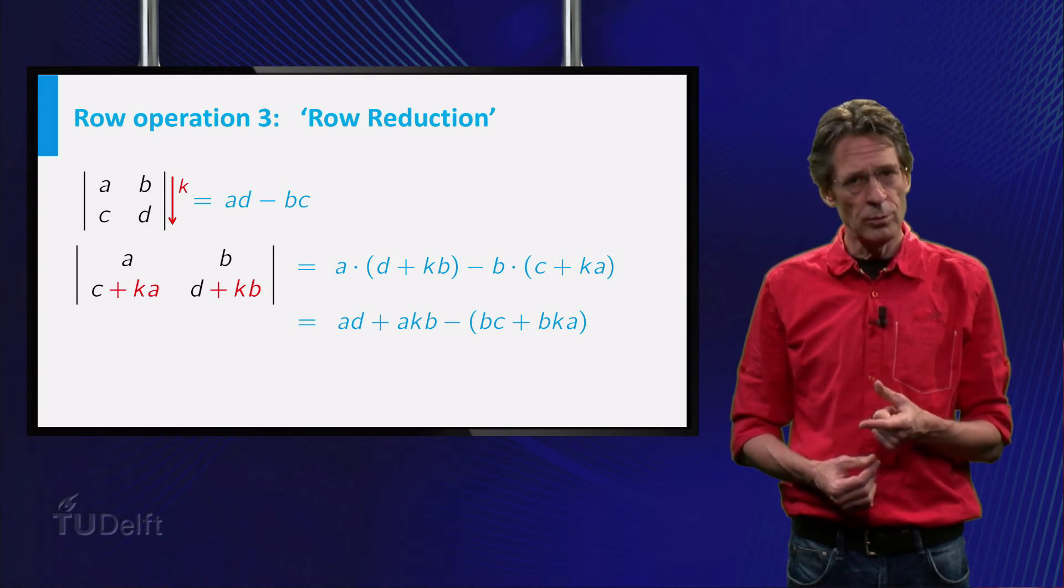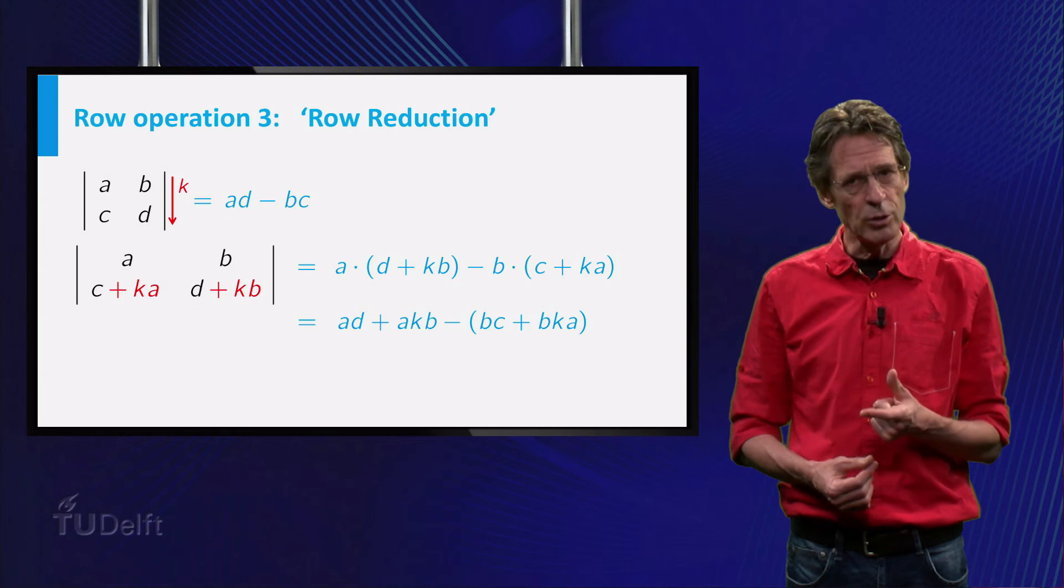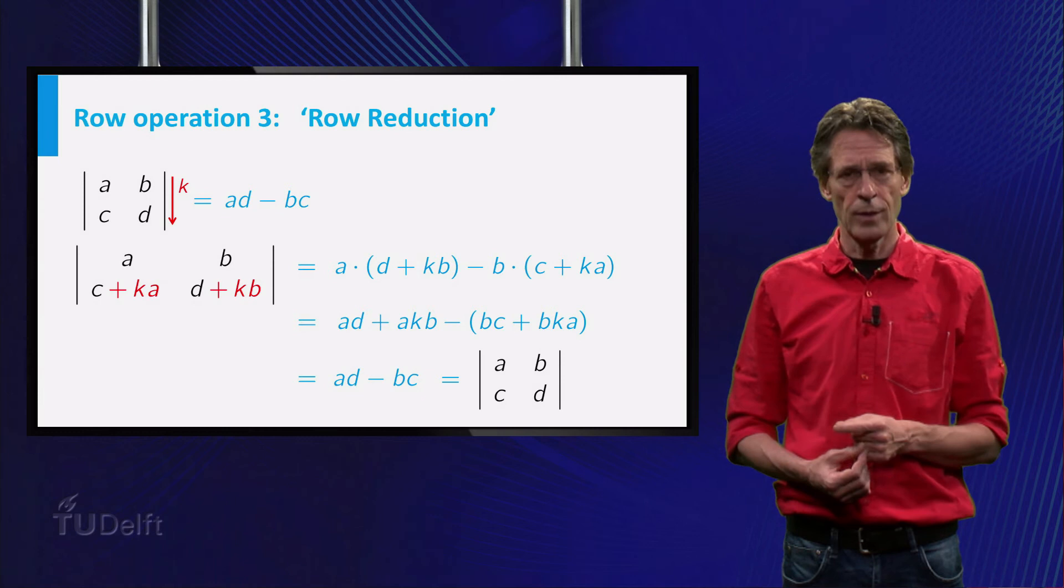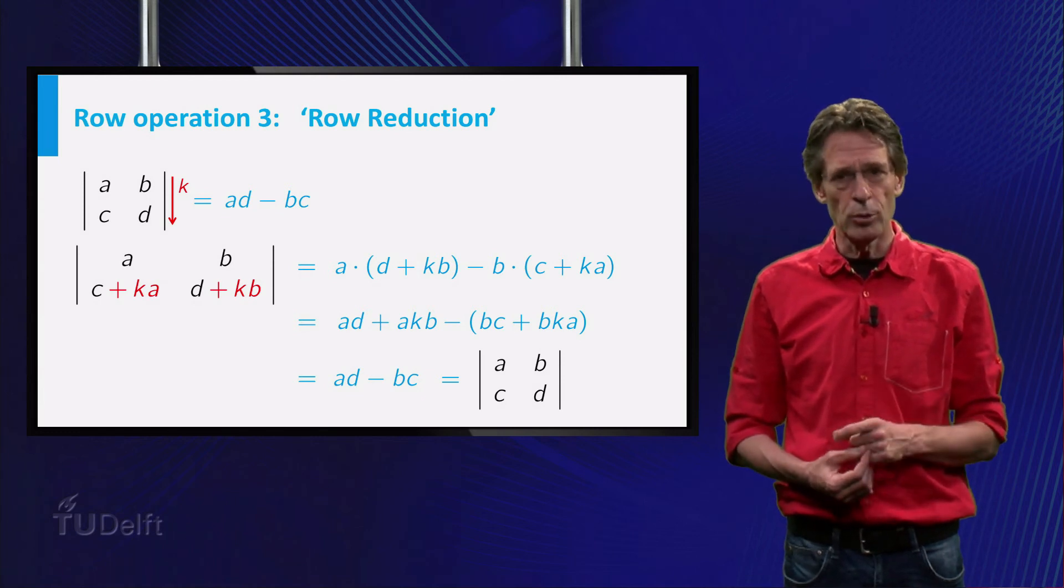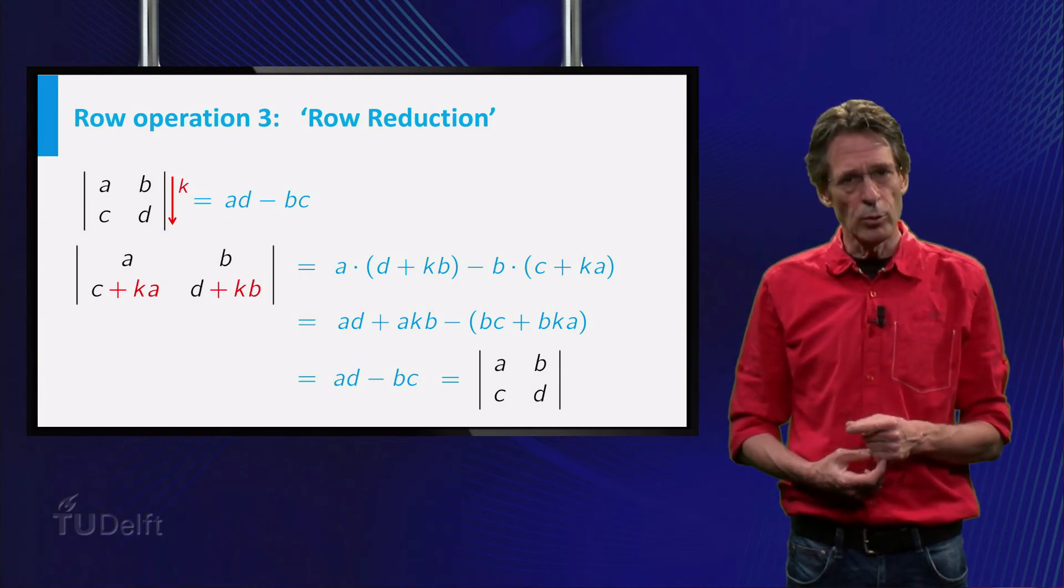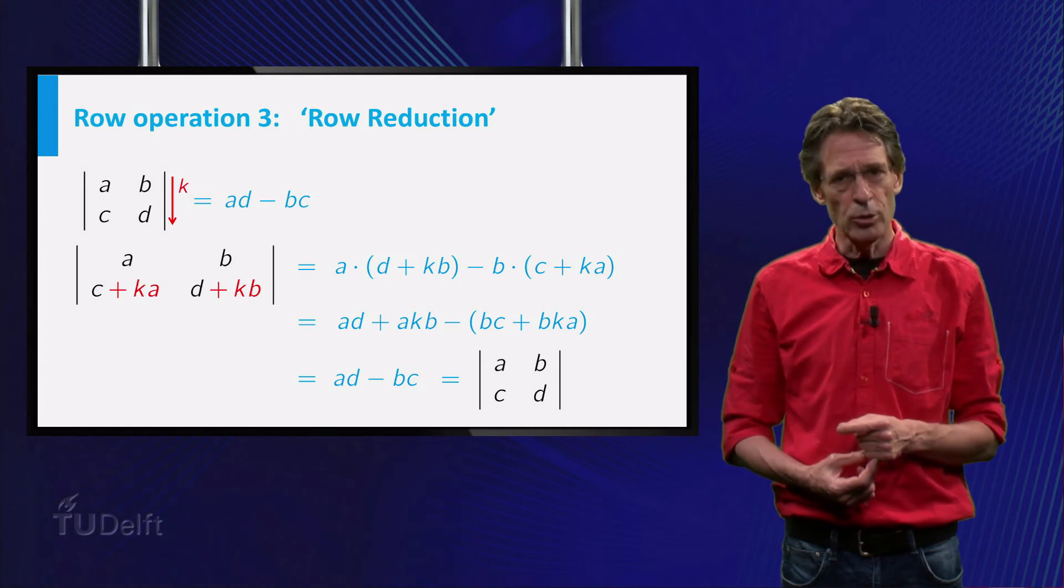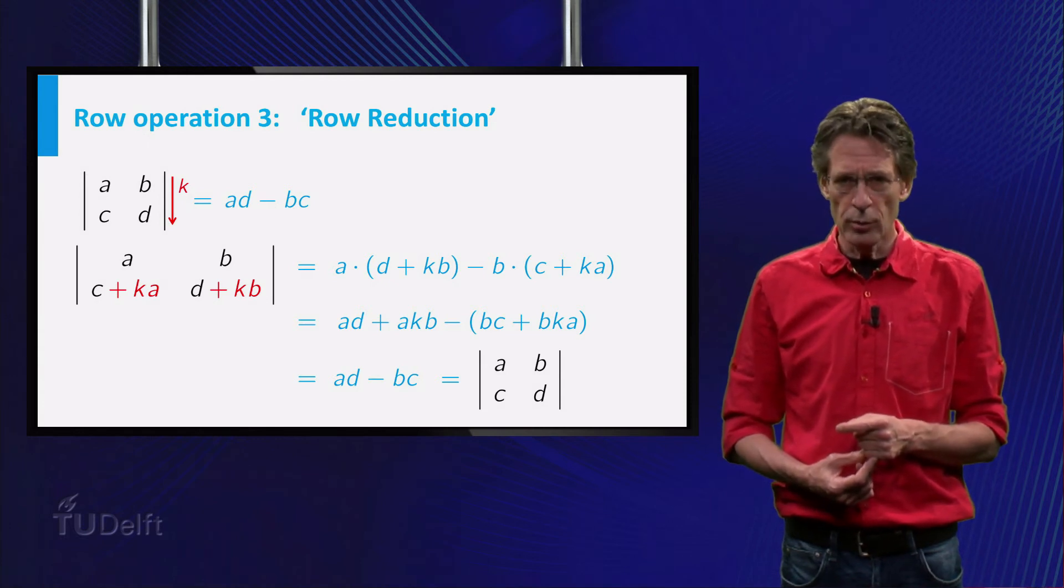You see, don't you? And if you delete these terms, you find that the second determinant is equal to the first. Again, without general proof, I tell you that there is a general rule here. Adding a multiple of a row to another row doesn't change the value of a determinant.